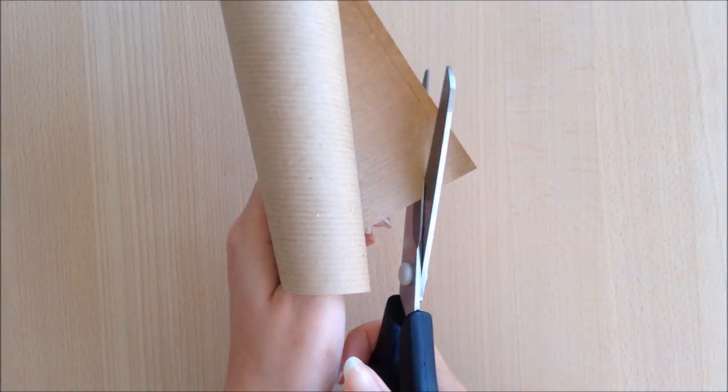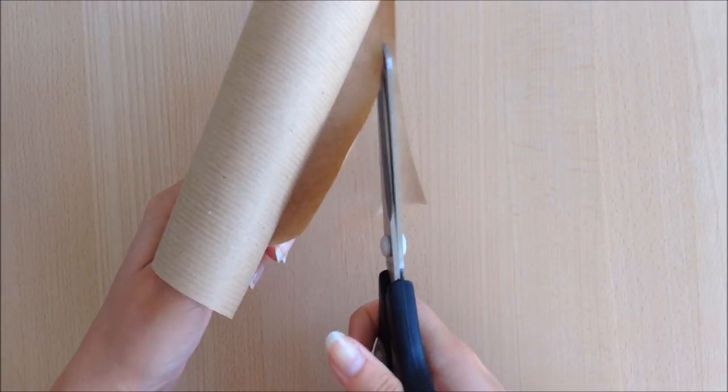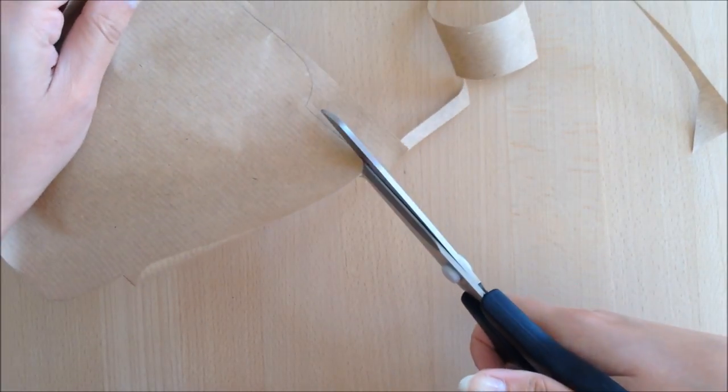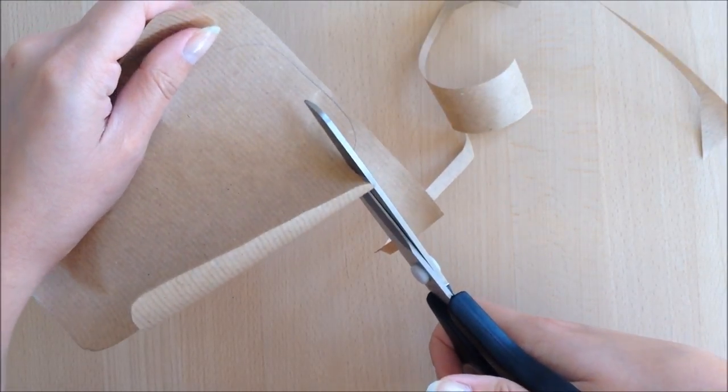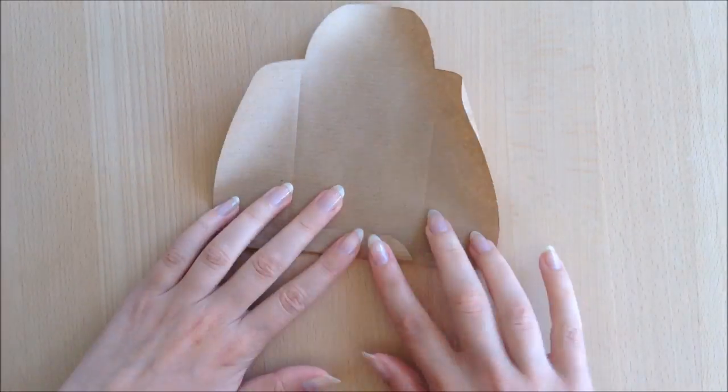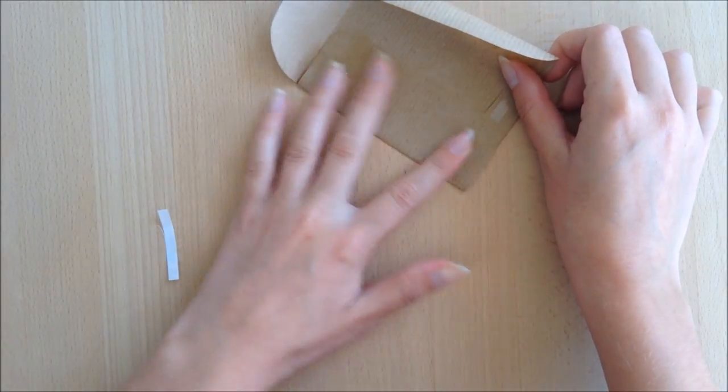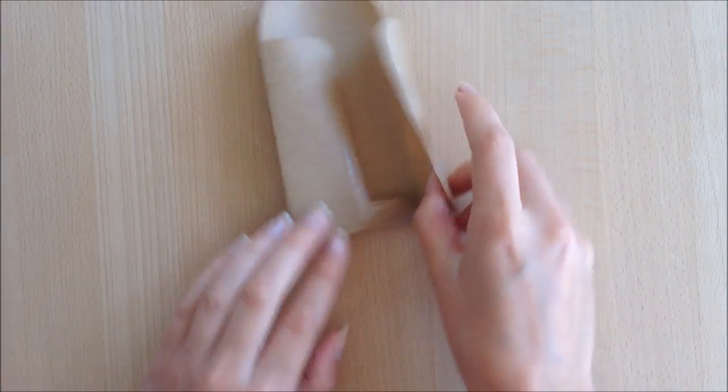Instead of using thick cardstock paper, you can actually use wrapping paper. And the great thing about wrapping paper is that it's super inexpensive, and you probably already have something laying around. And if you need to make a lot of small envelopes, or big envelopes, this is a very cheap alternative to the cardstock paper. And the process is basically the same.